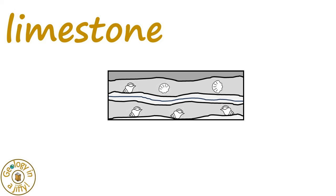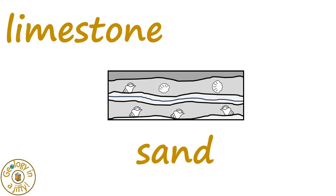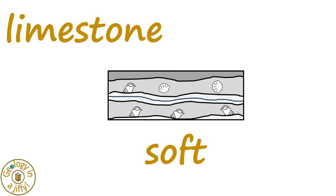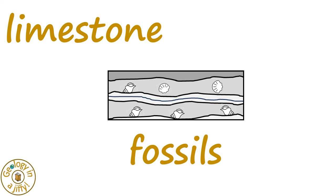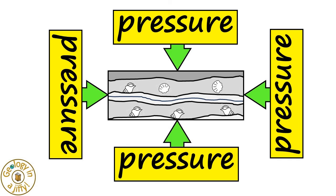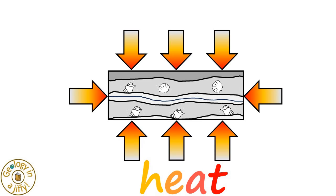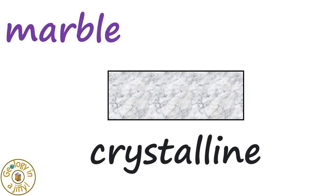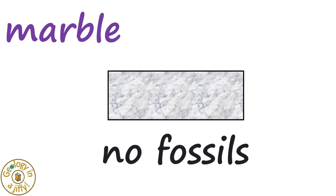Take this sedimentary limestone for example. It's made of sediments such as mud and sand, deposited in layers, the rock being quite soft and probably having fossils in it. When we take our limestone and compress it with heat too, our limestone gradually metamorphoses to marble — the marble being crystalline, with no fossils remaining, as they were destroyed during metamorphism.